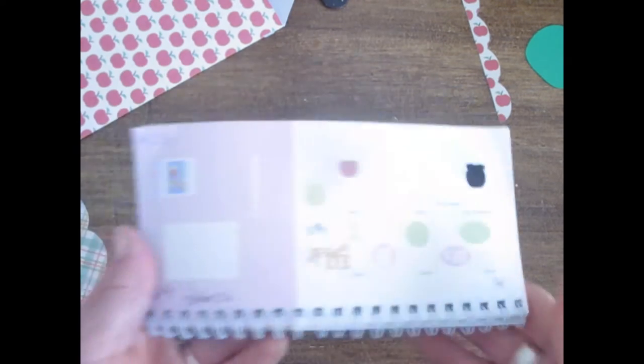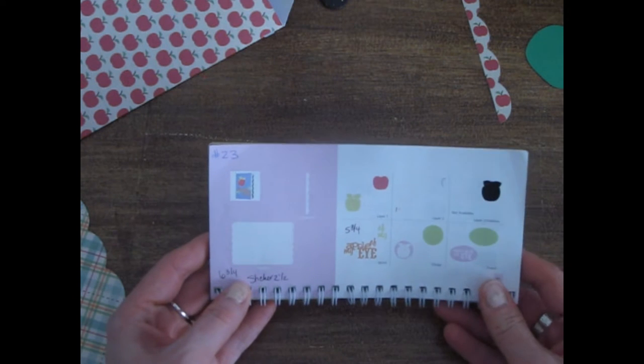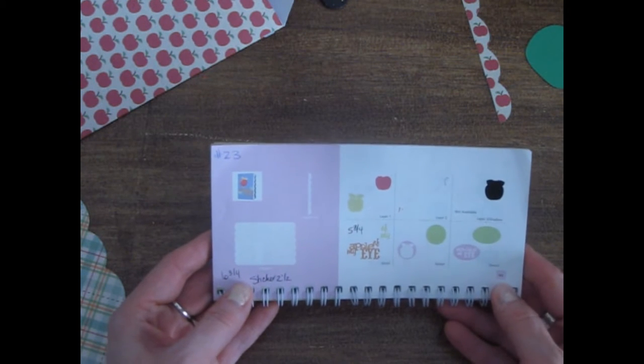Hi, it's Anita from Scrappy Happy Mommy, and today I'm back with another Just Because Cards video tutorial. Today I'm working on card number 23, which is the apple card, found on page 46 of the manual.